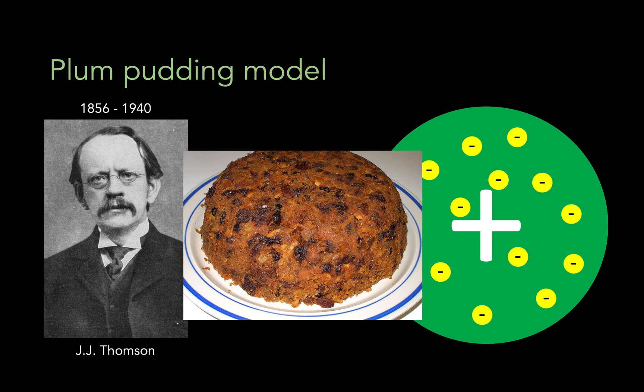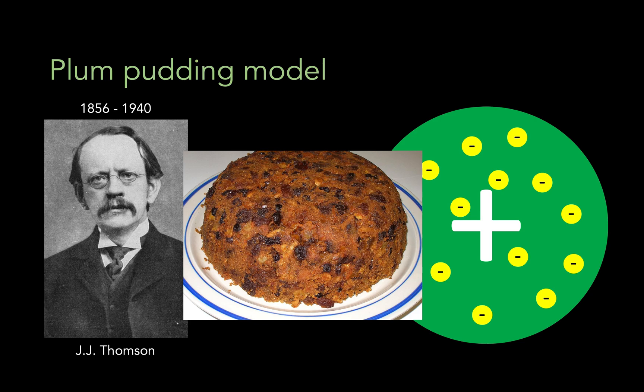Now, according to this model, the charges are all diffusely distributed around the atom, and since there is no big concentration of charge, there is nothing to deflect the alpha particles, and they would go right through.